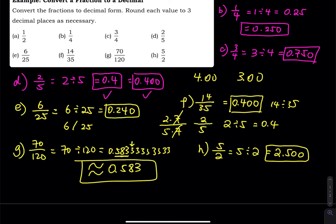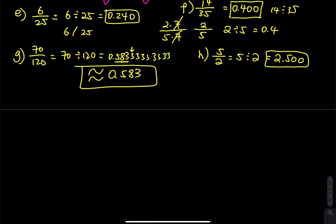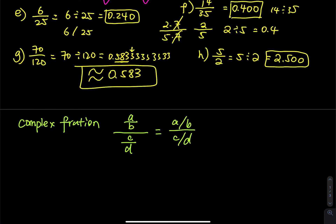Before we end this video, in statistics you sometimes have to use a complex fraction. A complex fraction is simply a fraction divided by another fraction. So you might have A over B divided by C over D, written as (A/B)/(C/D). You can also have a fraction on just one level, like A over B divided by C, or C divided by D divided by X over Y. As long as you have a fraction inside a bigger fraction, we call that a complex fraction.